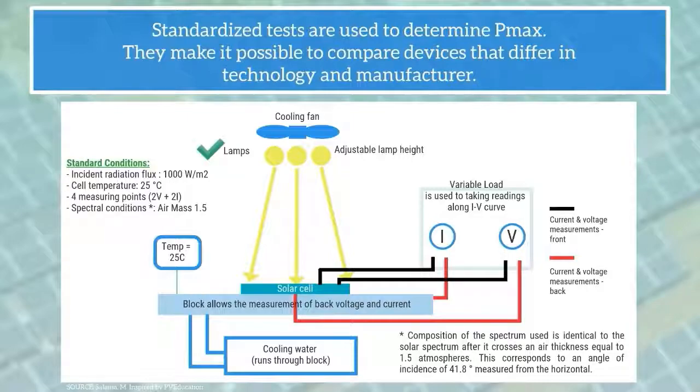Lamps meeting these specs are placed above the solar cell. The solar cell is placed on a block that allows the measurement of its front and back voltage and current. Cooling water runs through the block to maintain the cell temperature at 25 degrees Celsius. Finally, a variable load is used to take readings along the IV curve.